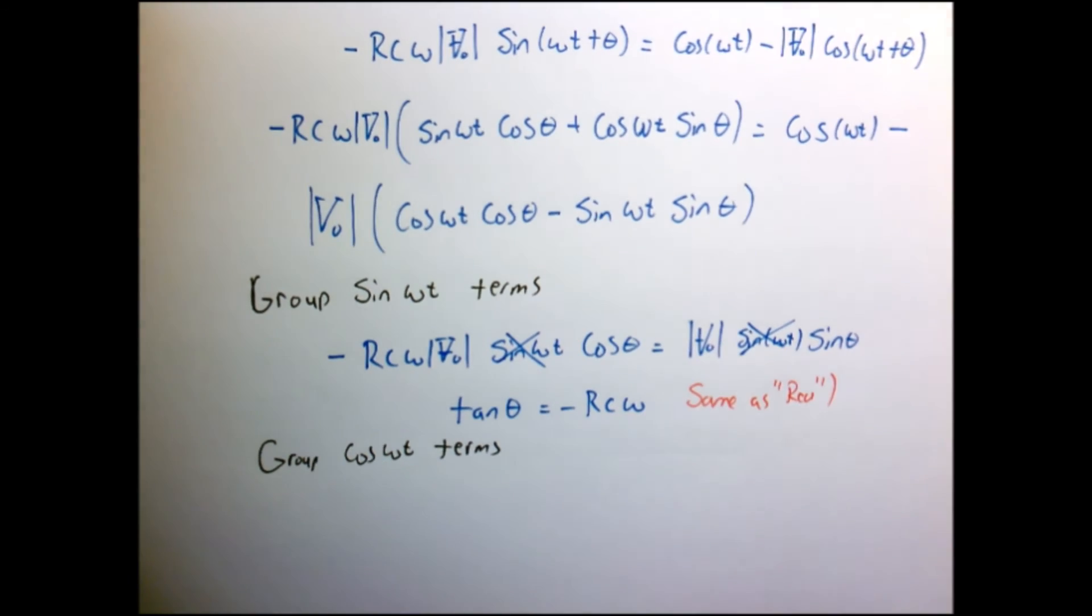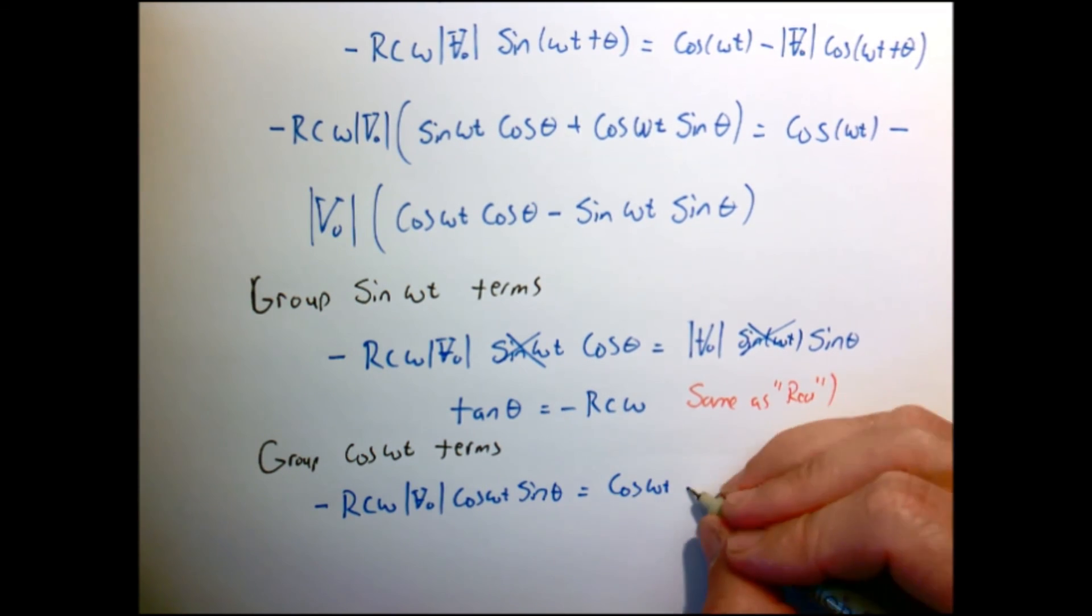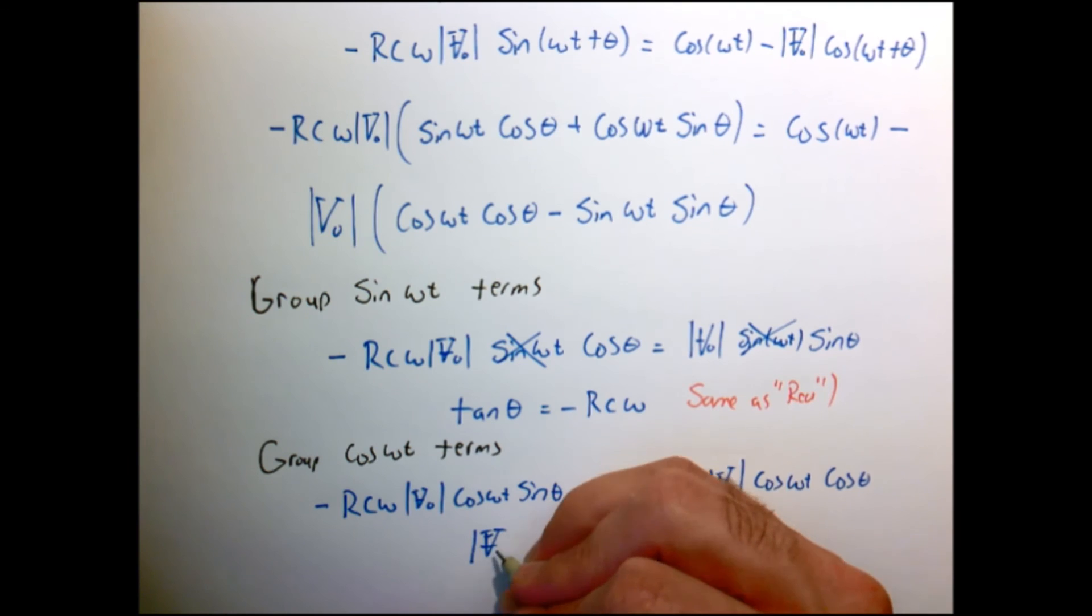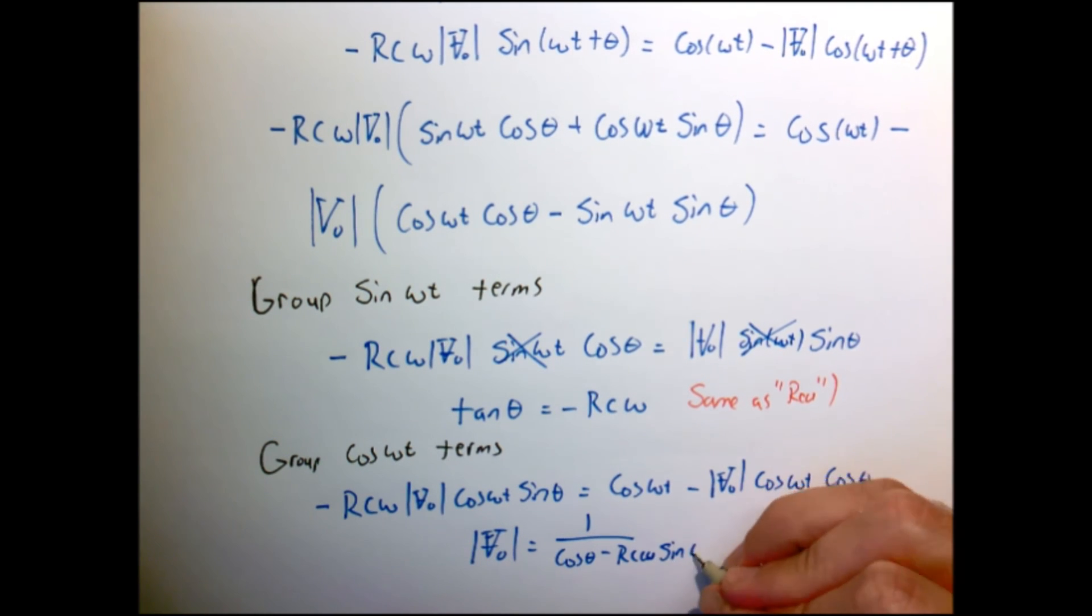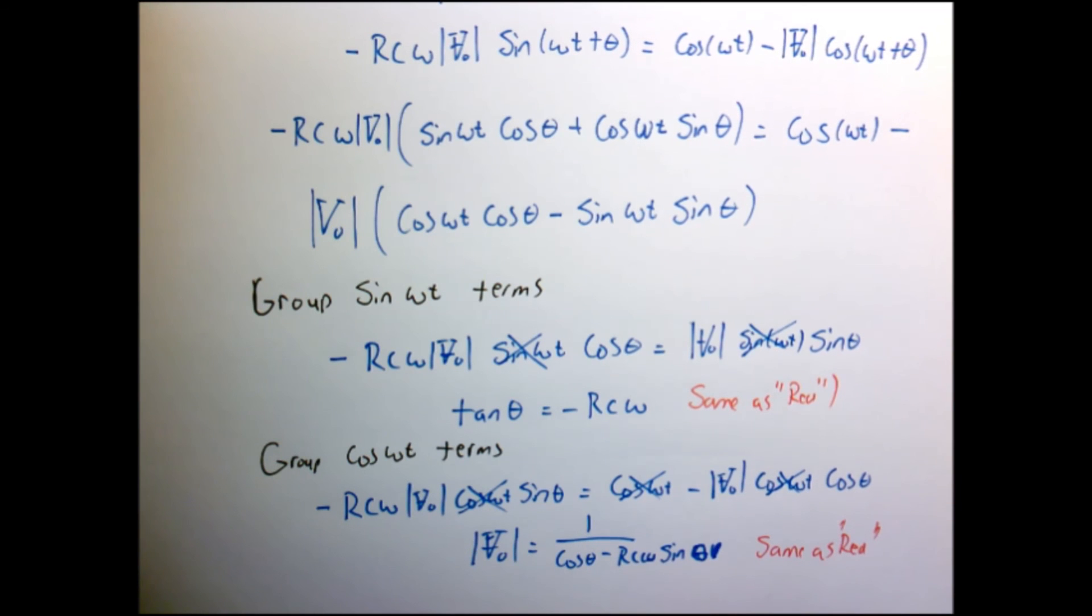Now let me group the cosine of omega t terms together. I made a little mistake there, but I think I got it right now. So if I group the cosine of omega t terms together, those will all cancel out. And if I regroup it, I can solve for v naught, which gives me one over cosine of theta minus rc omega sine of theta, which is the same thing as the red problem that we got before.